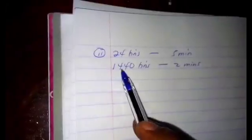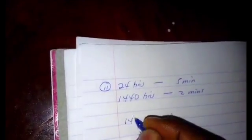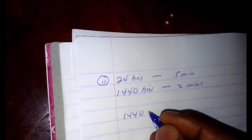Same approach: if less, more divide. Using 5 minutes to fill 24 tins, filling 1440 tins will be more. If more, then less divide. 1440 tins over 24 tins times 5 minutes.